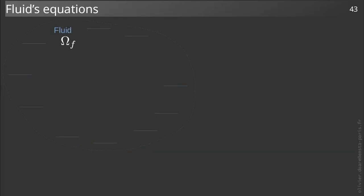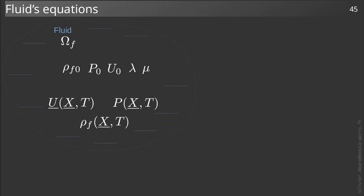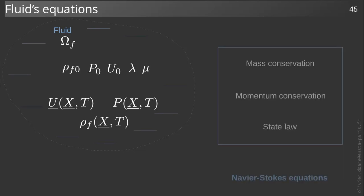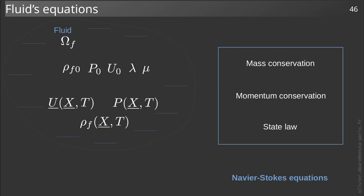Let us now study the equations in the fluid. The domain is denoted ωf. The fluid in this domain is parametrized by a reference density ρf0, a reference pressure p0, a reference velocity u0, which is generally the velocity of the flow at infinity, and the last parameters are the Lamy coefficients of the fluid. The field variables are the velocity field, the pressure field and the density field. To describe the fluid dynamics, we will use three equations.